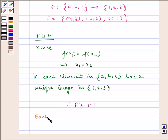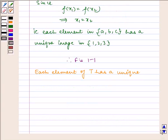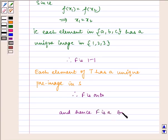Also, each element of T has a unique pre-image in S. Therefore, f is onto, and hence f is a bijection.